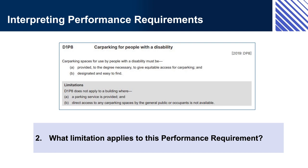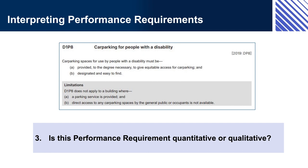Question 3: Is this performance requirement quantitative or qualitative? The performance requirement is qualitative — it says that you must provide disabled car parks to the degree necessary to give equitable access for car parking. A designer-builder can design in a certain number of spaces, and the appropriate authority would consider whether the proposed number was reasonable given things like the size, purpose, location, and likely use of the building. Someone could challenge the planned design on the basis that the number of disabled car parks was not sufficient — for example, a person with a disability or a disability advocacy group.